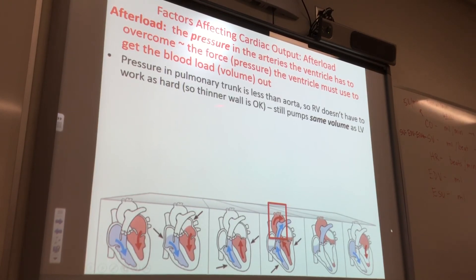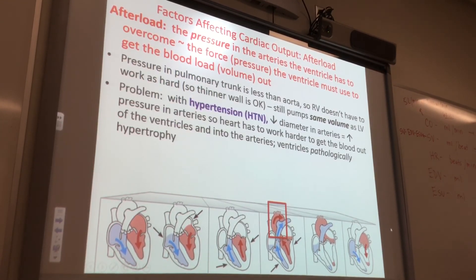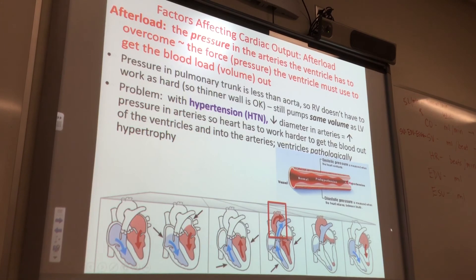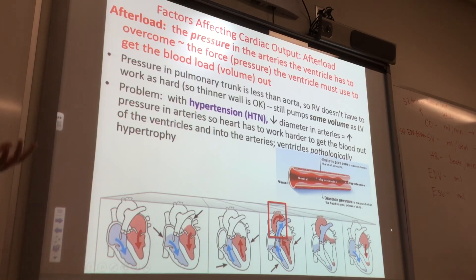The pressure in the pulmonary trunk is less than the aorta, so the right ventricle doesn't have to work as hard, but it still pumps the same volume as the left ventricle. When you have hypertension or high blood pressure, you decrease arterial diameter — here's a normal artery that's nice and patent, and here's a hypertensive artery with decreased diameter. The heart has to work harder, and the ventricles pathologically hypertrophy — they get bigger. That's pathologic because the heart is working against the increased afterload.